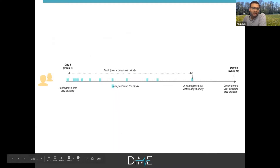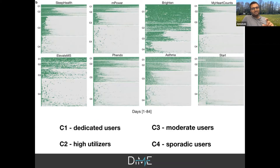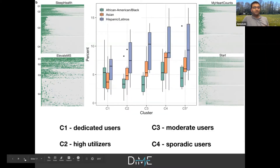A participant's journey in a research study app shows the days in which they do something. We tried to learn from unsupervised, label-free analysis. Collapsing all participant days — x-axis is days 1 to 84, y-axis is cluster — each green dot represents something a participant did. Very significant clusters and similar behavior emerge across studies. These clusters differ not just in engagement level but are also indicative of underlying sociodemographic differences. Minorities are significantly enriched in clusters C2 through C5, which is concerning but is what the data shows.